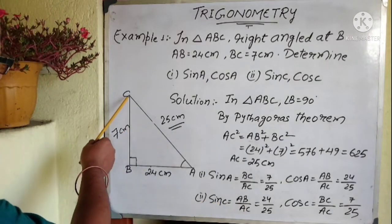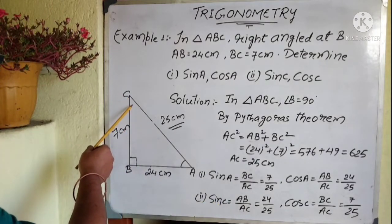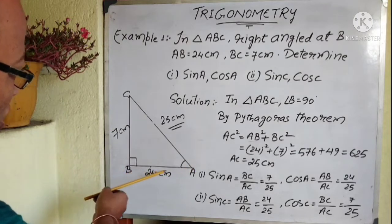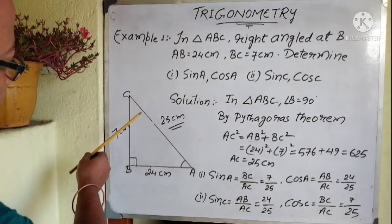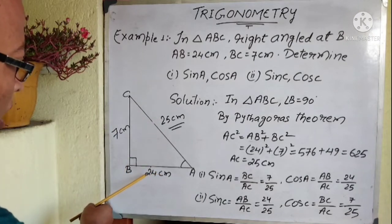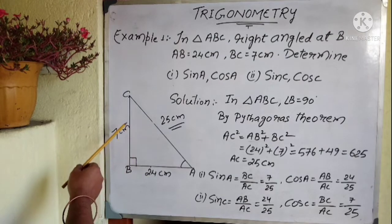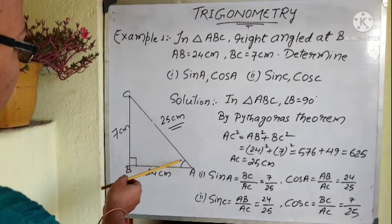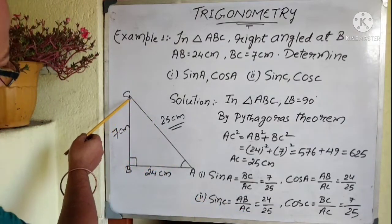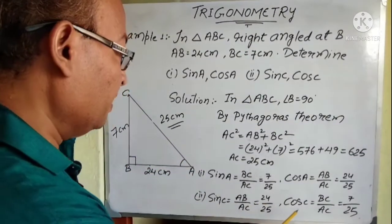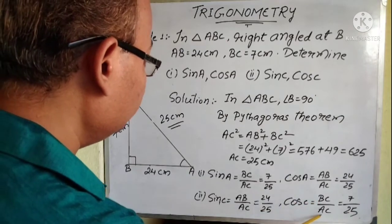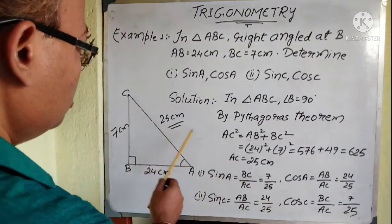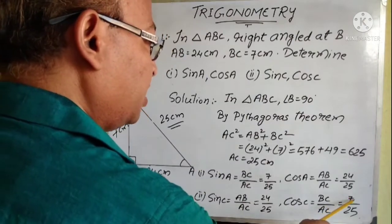For sine C: angle C is at vertex C, and the opposite side (height) is AB and hypotenuse is AC. So sine C equals AB by AC, which is 24 by 25. Cos C is base by hypotenuse: the base from angle C is BC, so cos C equals BC by AC, which is 7 by 25.